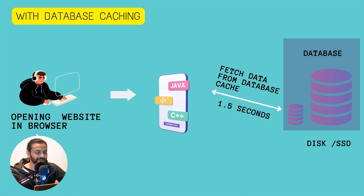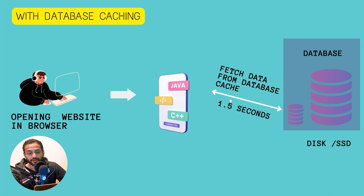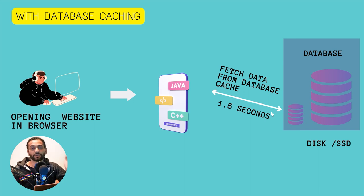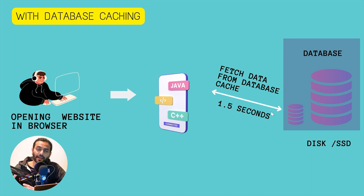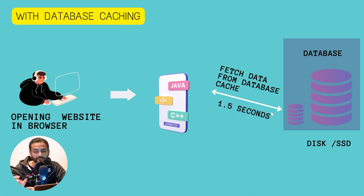Now, what happens with database caching? When somebody opens your website, the code processes the request and instead of querying the huge database, there's a small database called a database cache. The code fetches common data from this cache. Because it only handles common operations and common data, this process takes less time. For example, instead of getting all categories and products from the big database, it fetches from this small database cache on disk — let's say that's now 1.5 seconds.